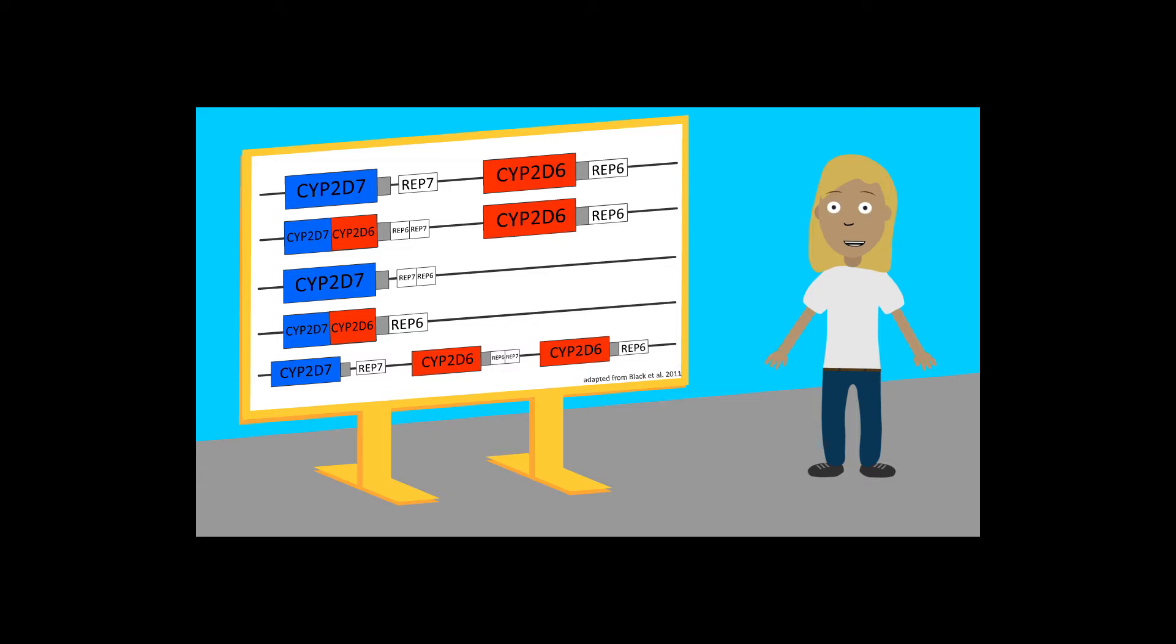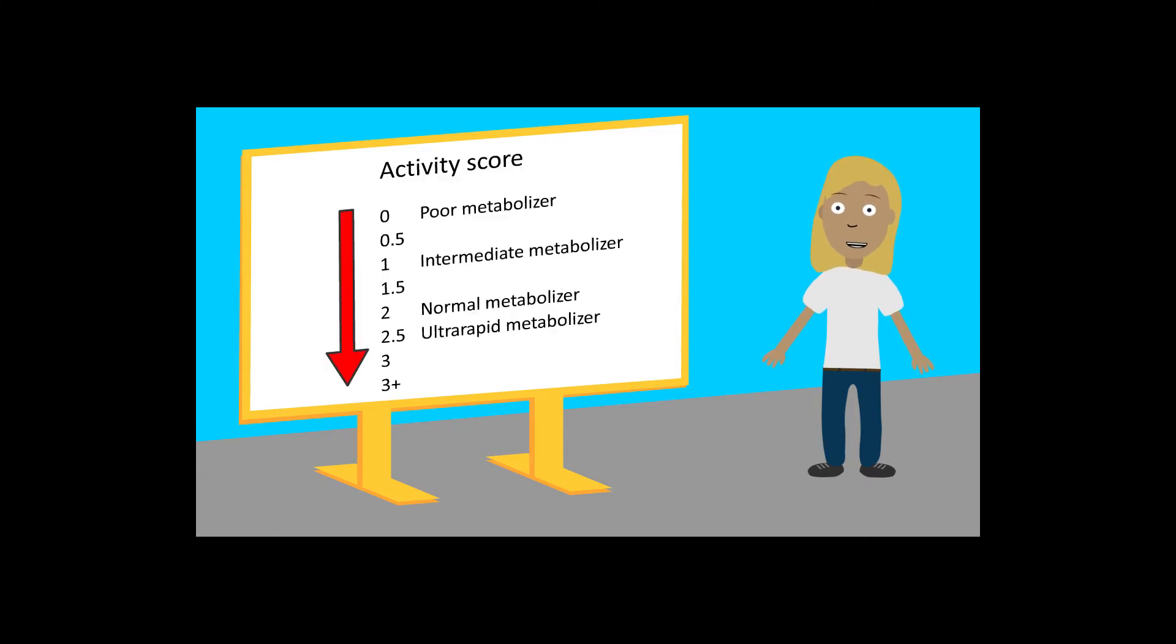We use PGRN-seq targeted exome sequencing data to assign diplotypes and associated activity scores to 309 human liver samples.